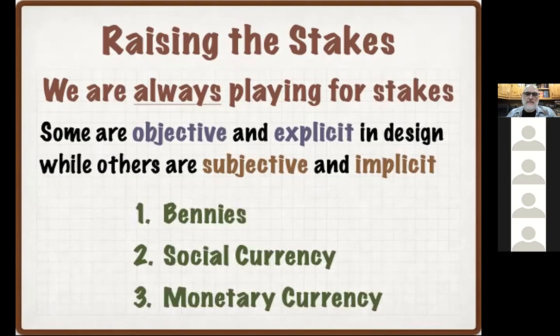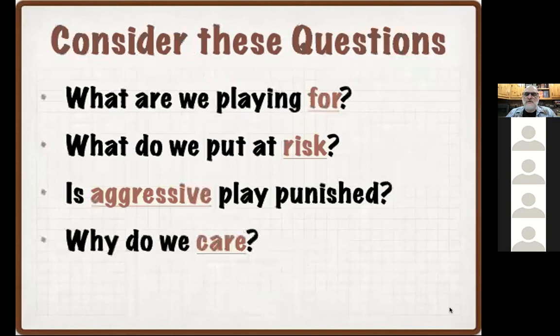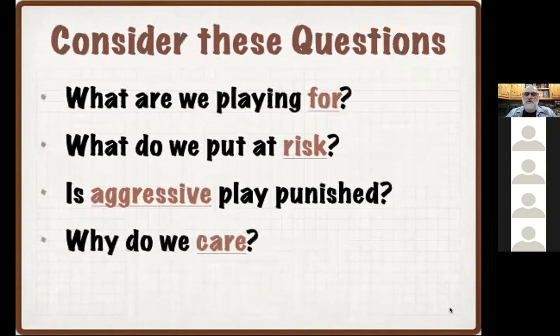There are three particular stakes I like to talk about. The first is a broad category called bennies. The second type of currency we use in gaming is social. And the last type of currency — which may be used fully or as another layer on top of these others — is something monetary, when we've got money riding on the outcome. As we look at these three different types of currency, there are a few questions to think about, with slightly different answers based on the type of currency we're being asked to spend.